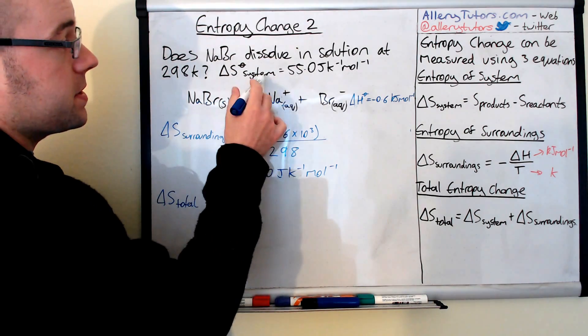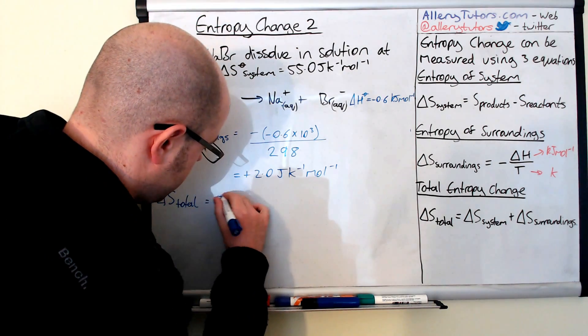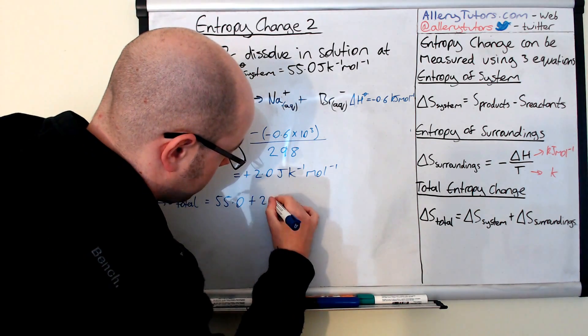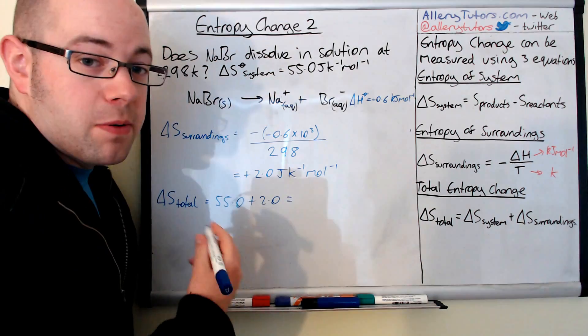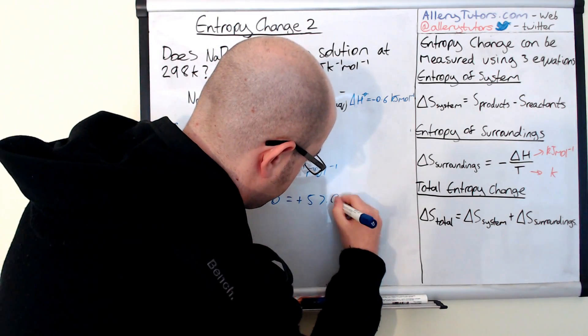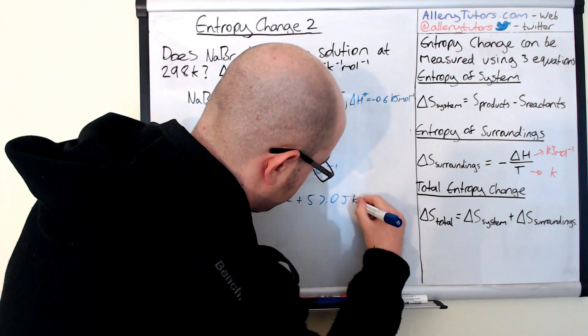That will equal system, which is 55.0, plus the surroundings, which is 2.0. And that will equal 57. So plus 57.0 joules per Kelvin per mole.